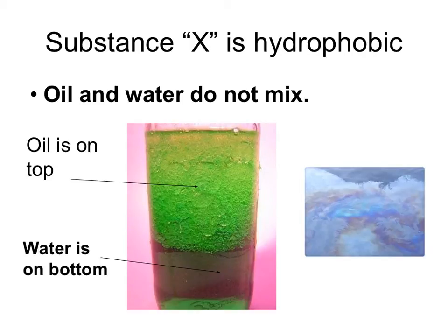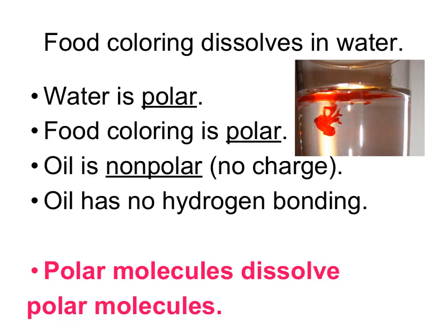In the lab you also tried mixing different substances. Substance X was hydrophobic — it didn't mix at all with water, much like oil. It was a hydrocarbon substance. Oil and water won't mix; water with non-polar substances will separate. For example, food coloring is polar like water, so they mix into solution. But oil and other hydrocarbons are non-polar, so they won't hydrogen bond and won't come apart in water.